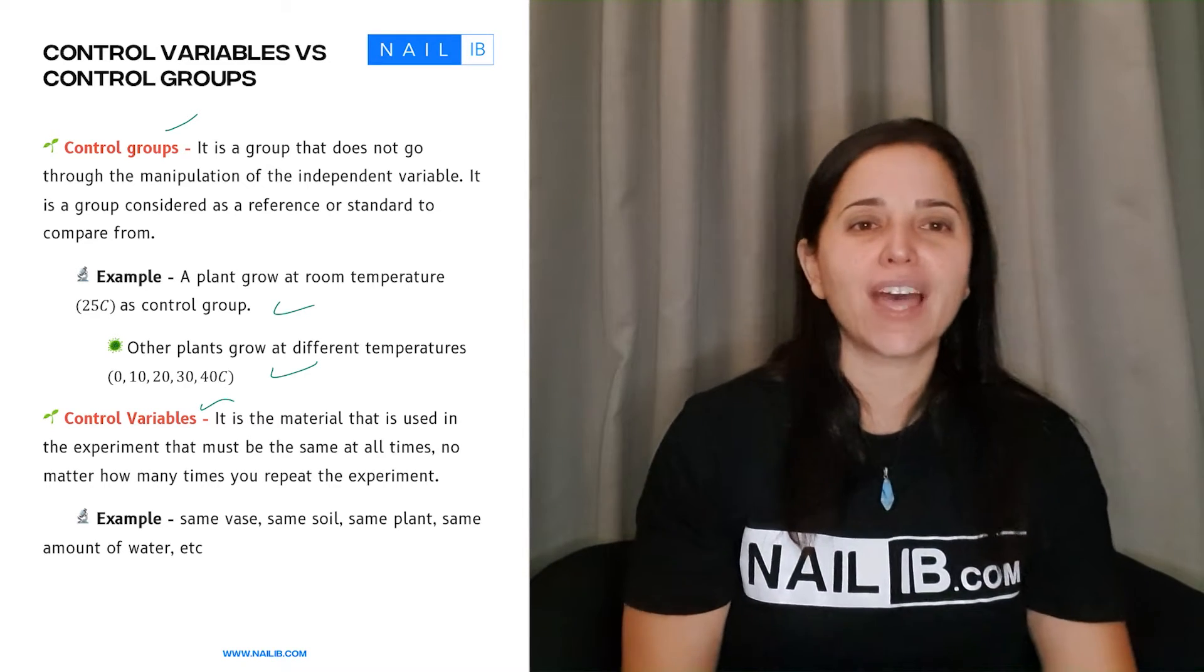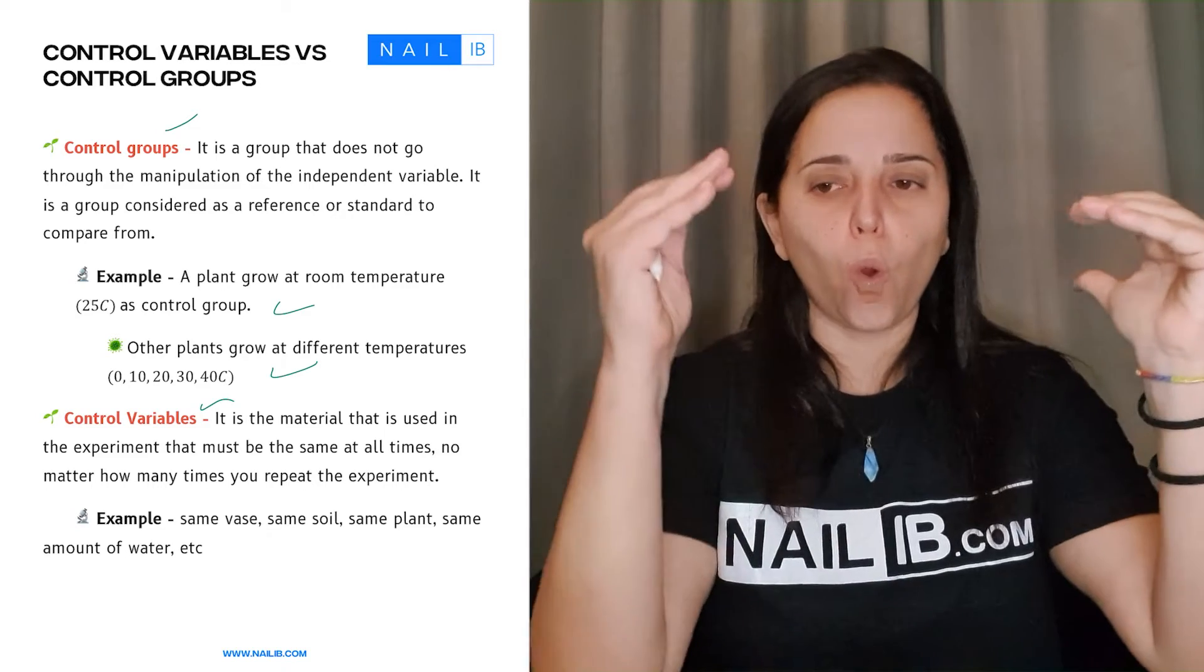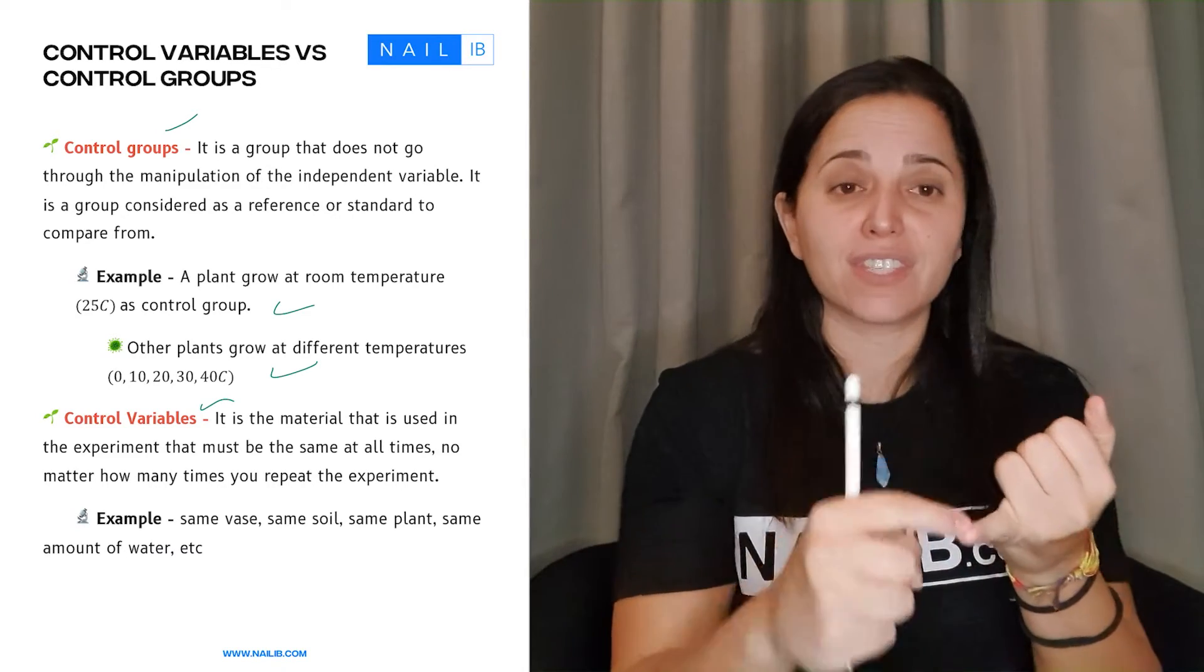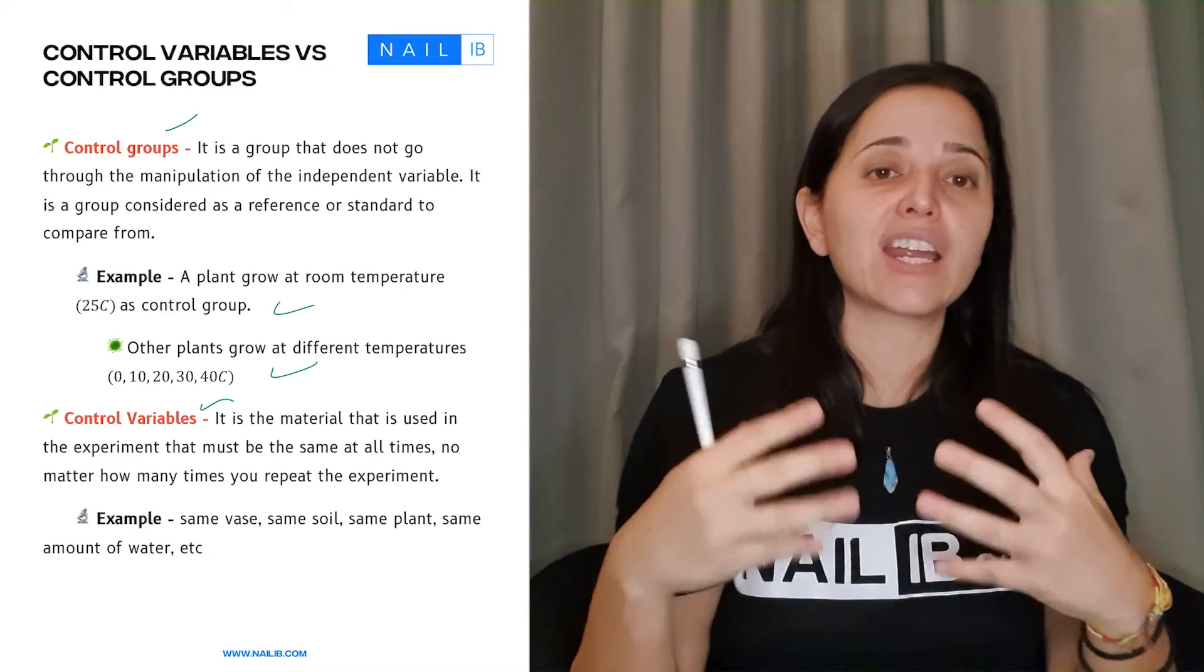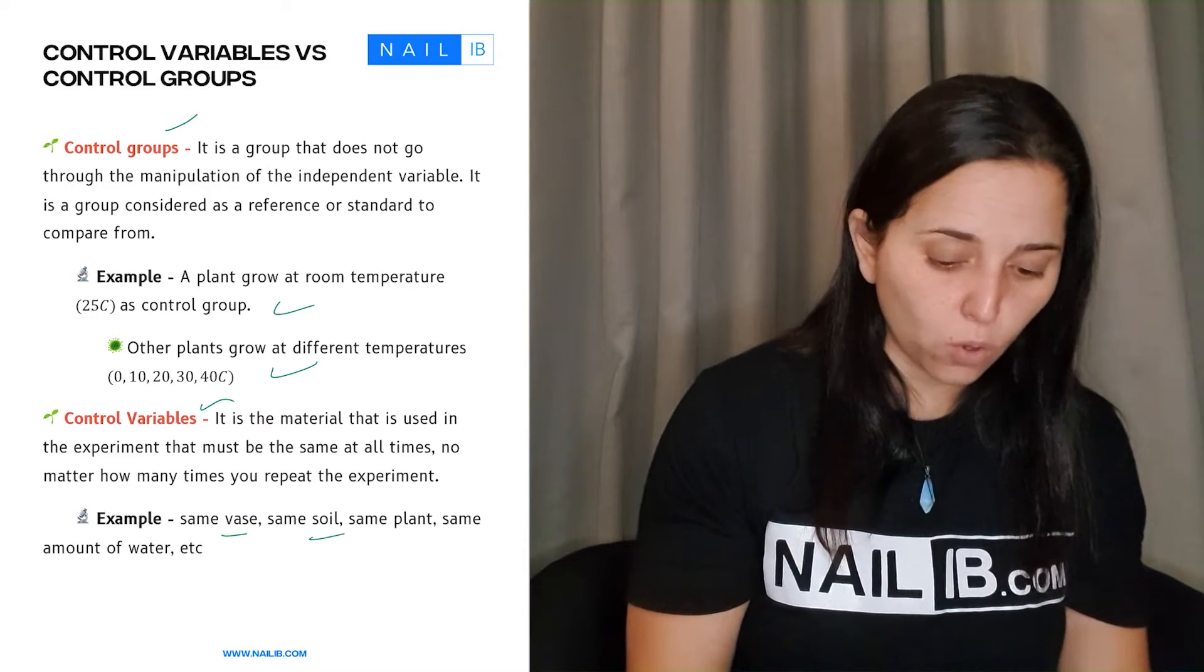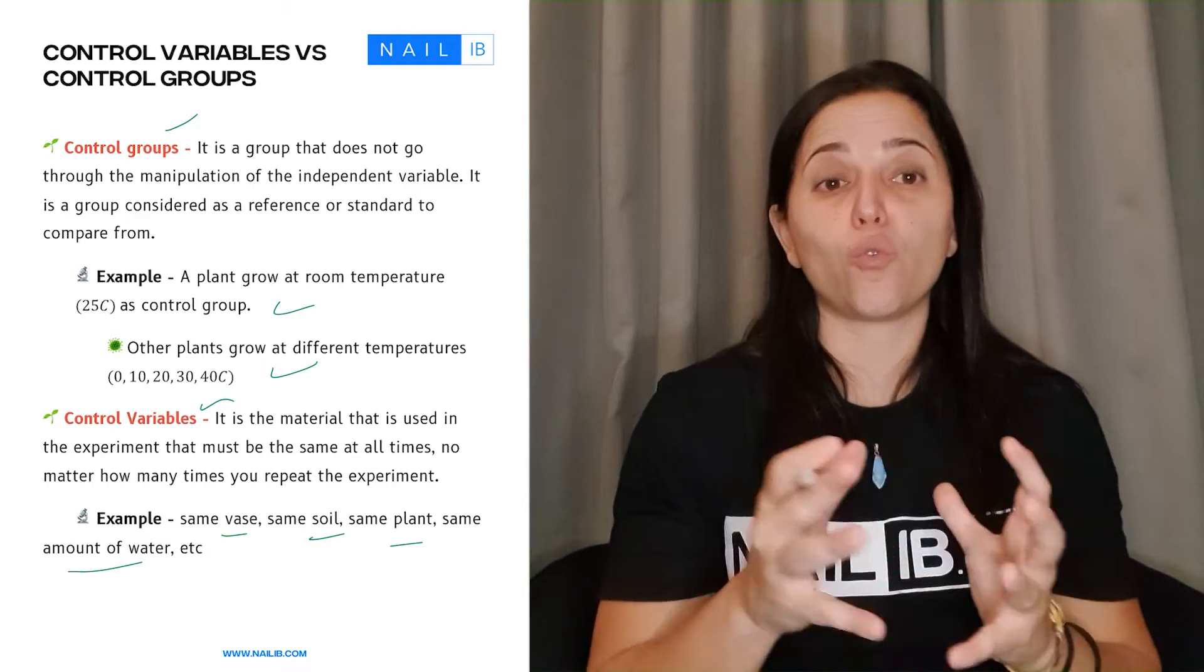Now control variables, that is your procedure. In your procedure, what are the things that you're using that stay the same at all times? If you use the same beaker, you do the same movement, you do the same amount - these are the control variables. So it can be same vase, same soil, same plant, same amount of water, etc. That's what the control variable is.